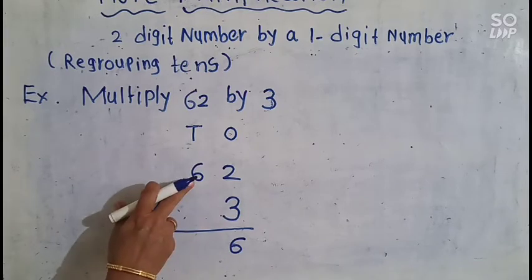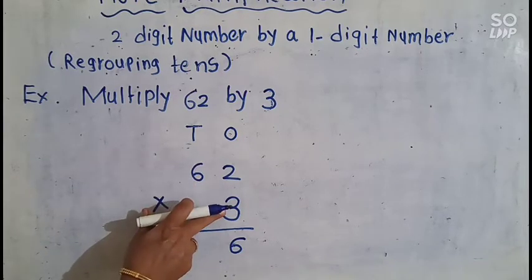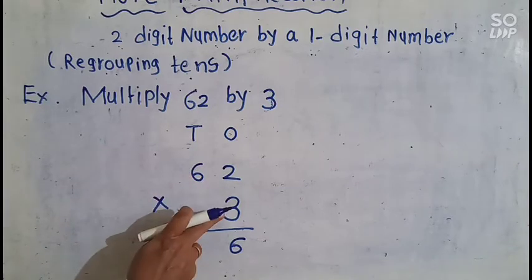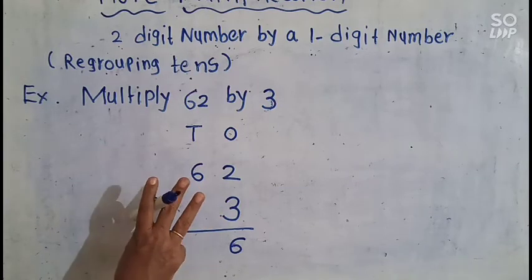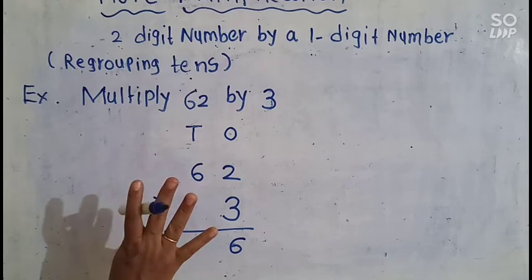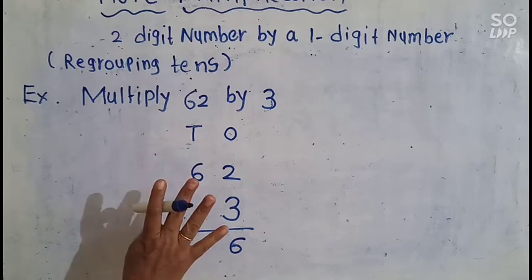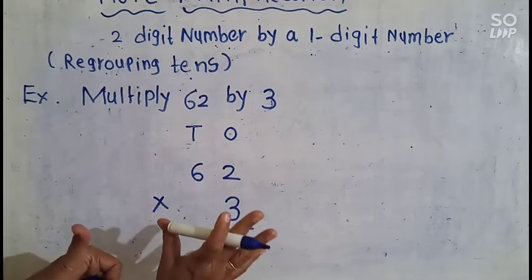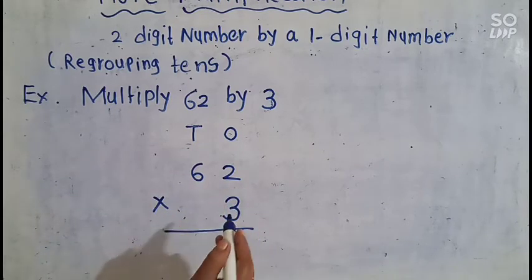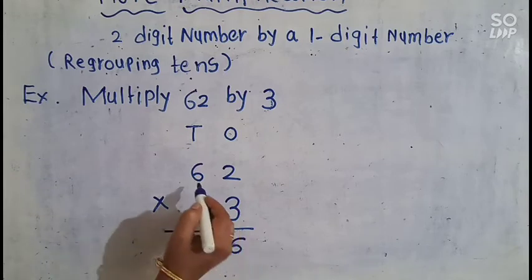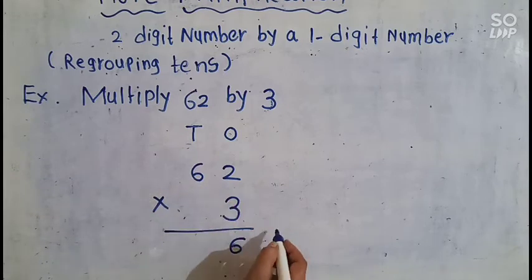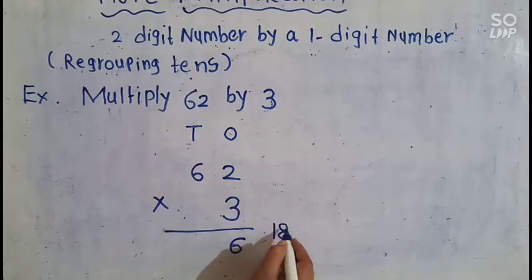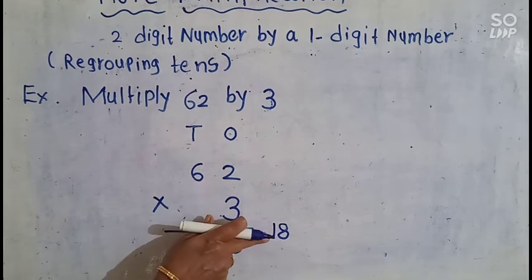3 × 6 — let's go through the 3s table up to 6: 3 1s are 3, 3 2s are 6, 3 3s are 9, 3 4s are 12, 3 5s are 15, 3 6s are 18. So 3 6s are 18. This 18 means 18 tens.